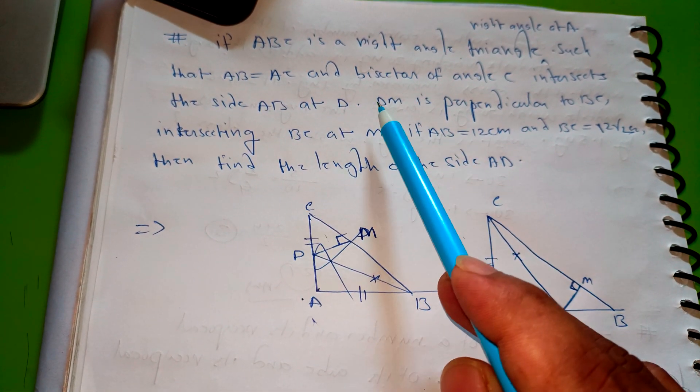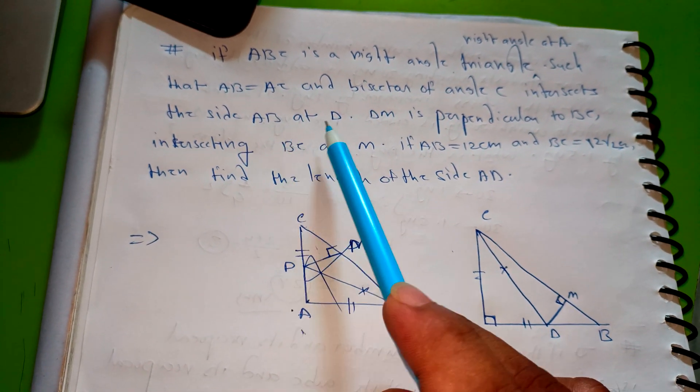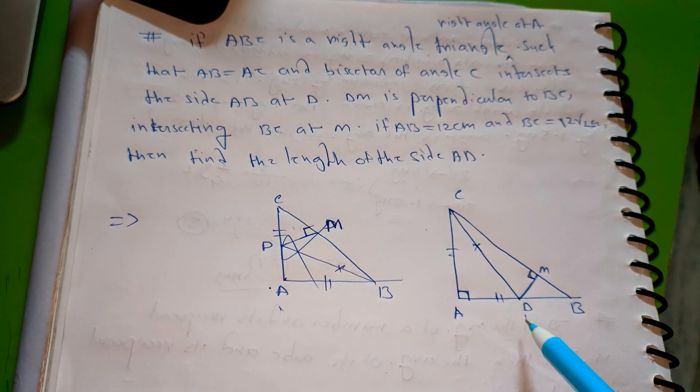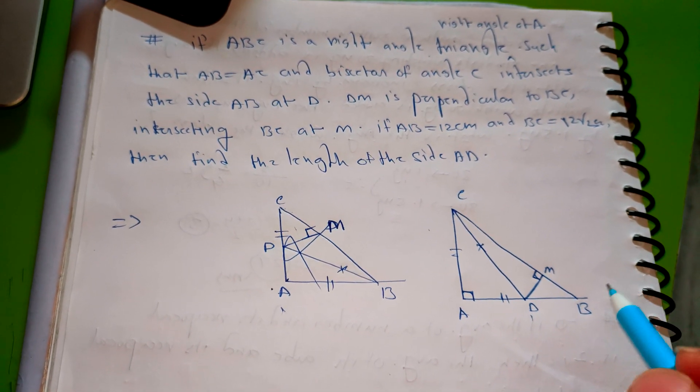And bisector of angle C intersects the side AB at D. DM is perpendicular to BC.